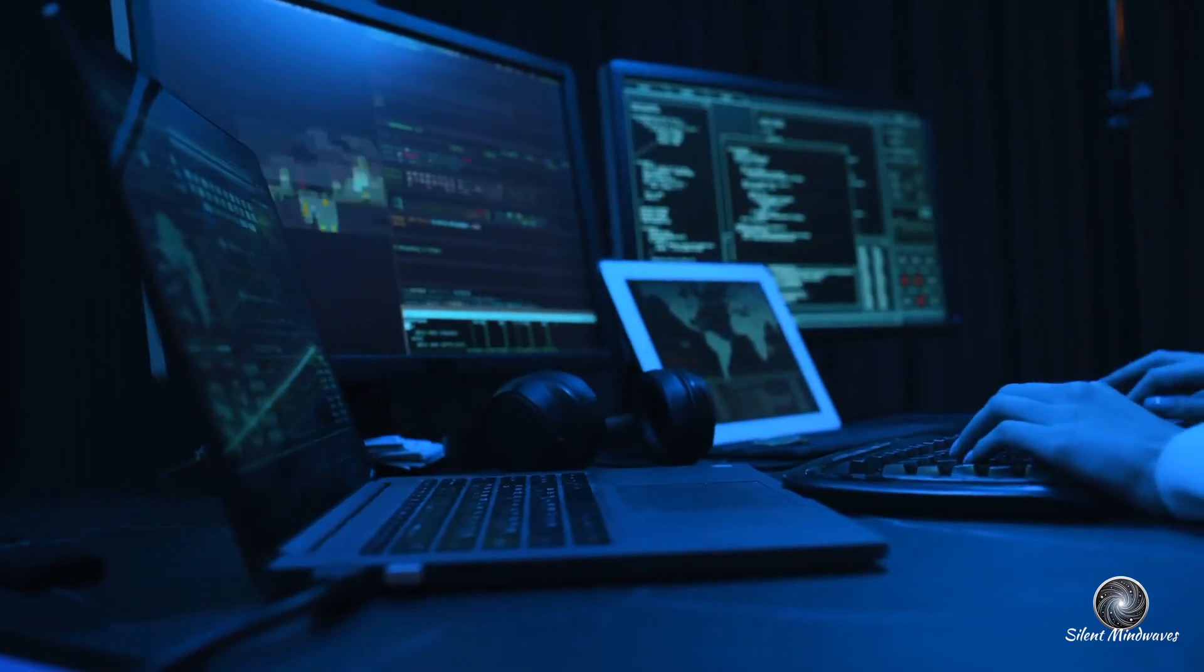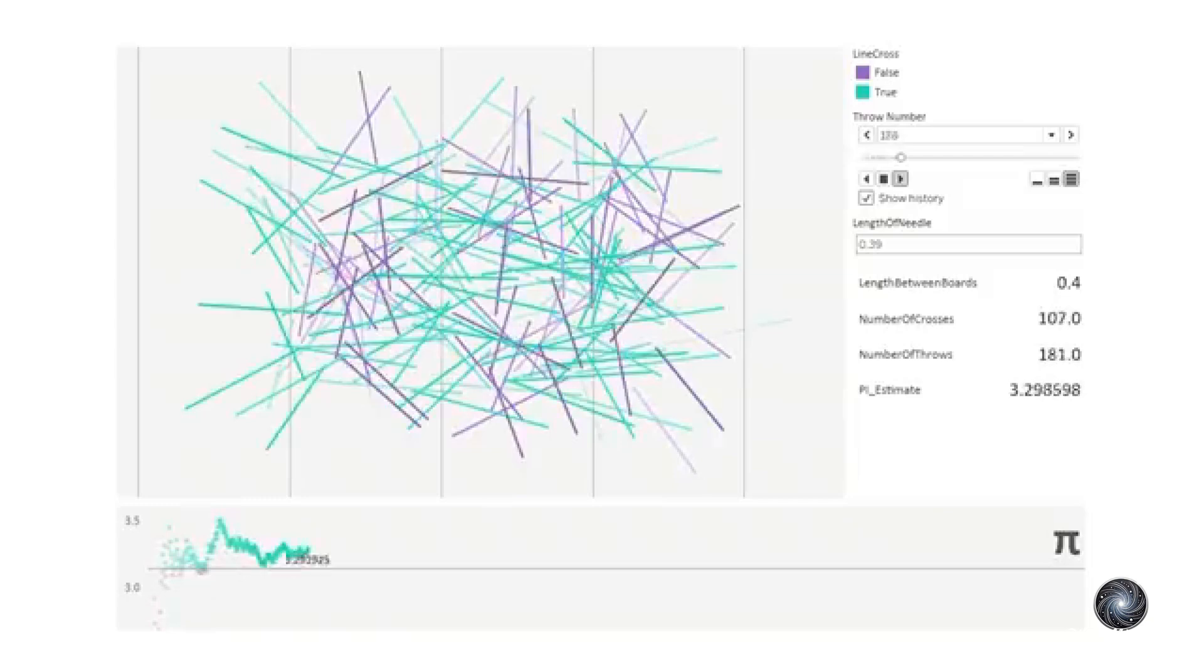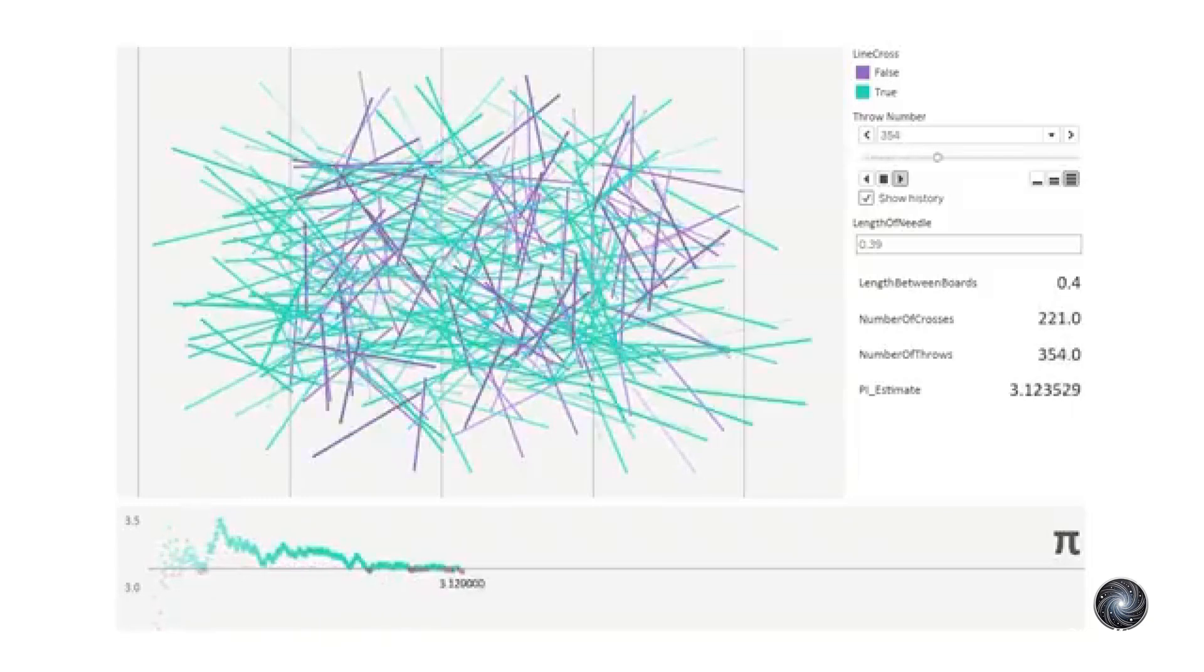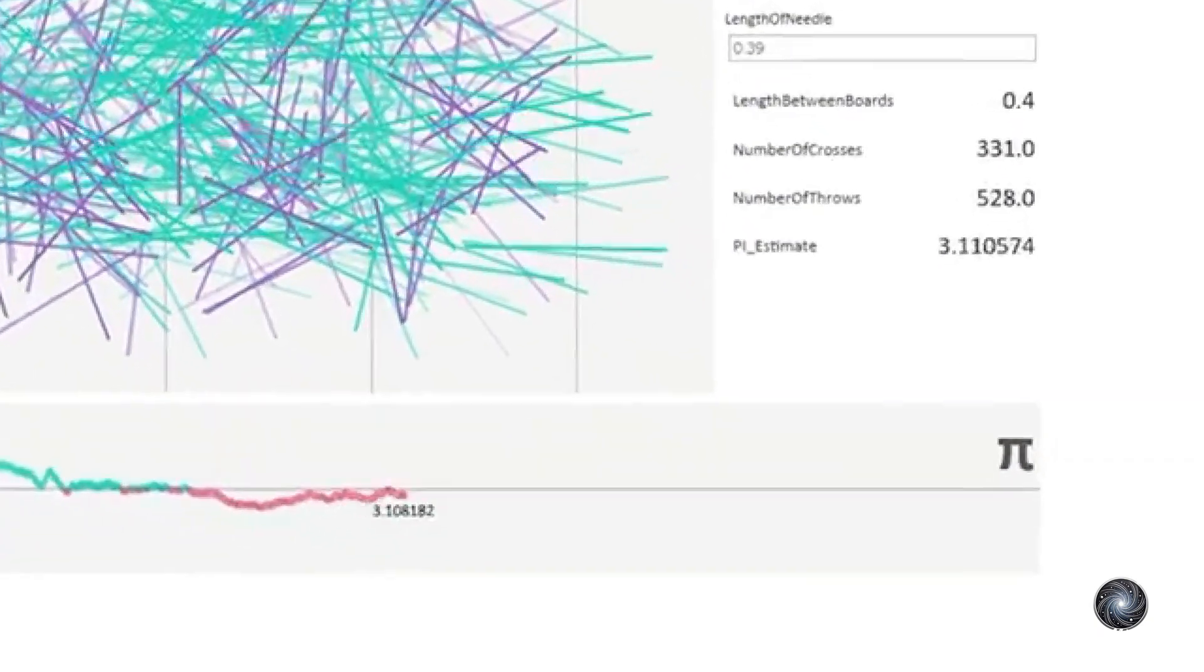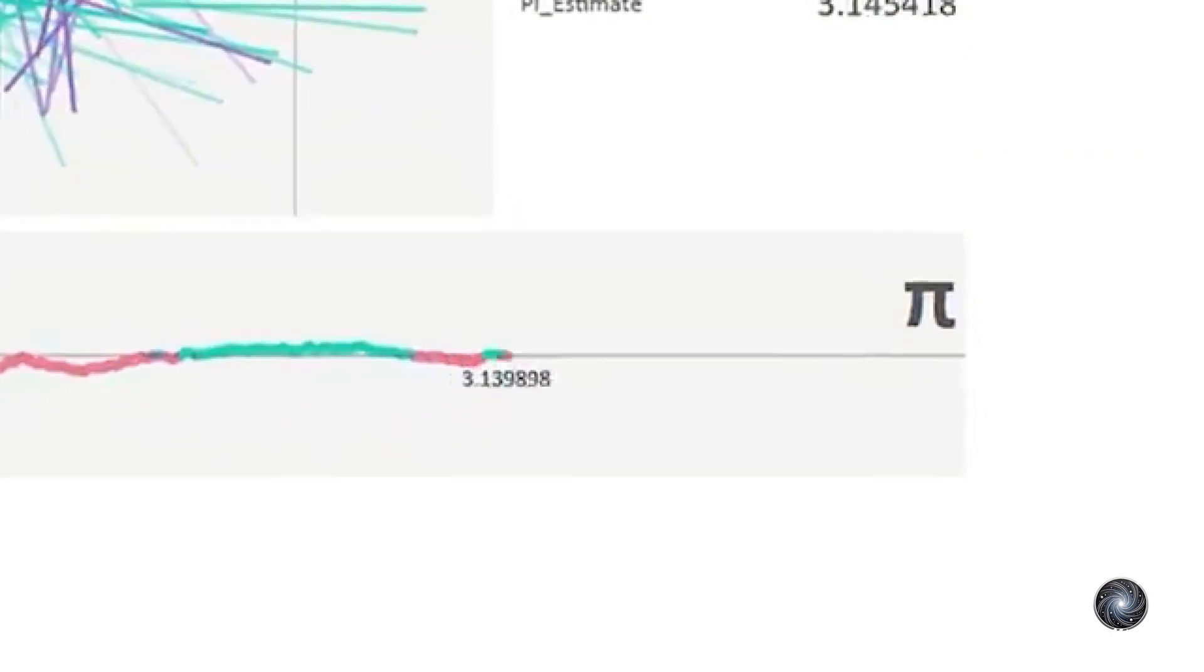Using computers, we can write code to simulate dropping needles not just hundreds of times, but thousands of times. The more trials we run, the closer we get to pi.